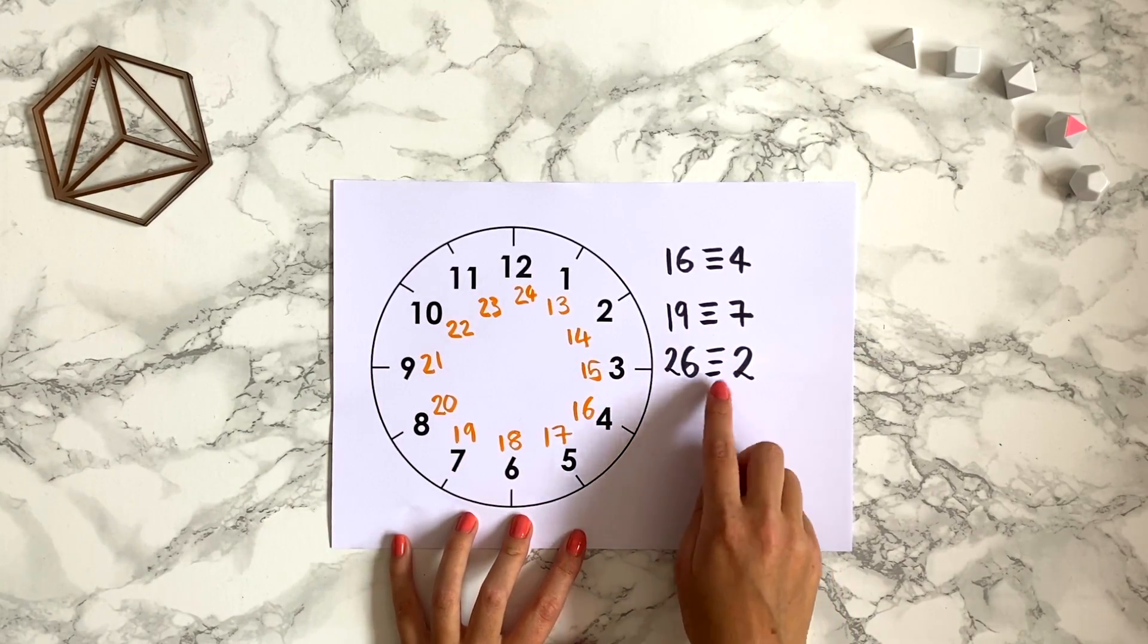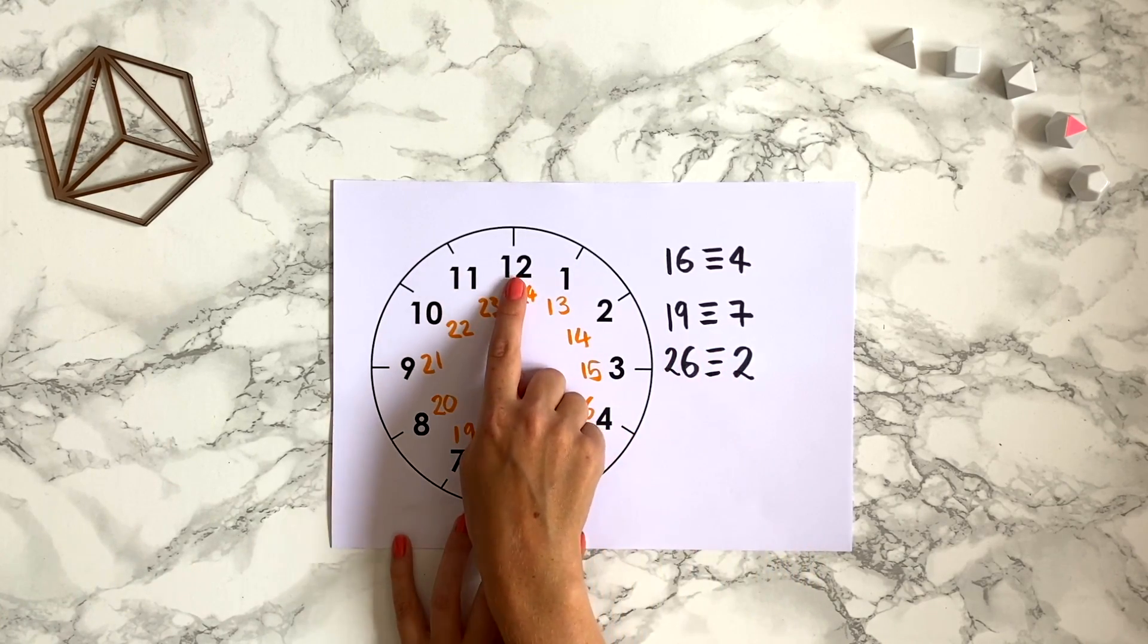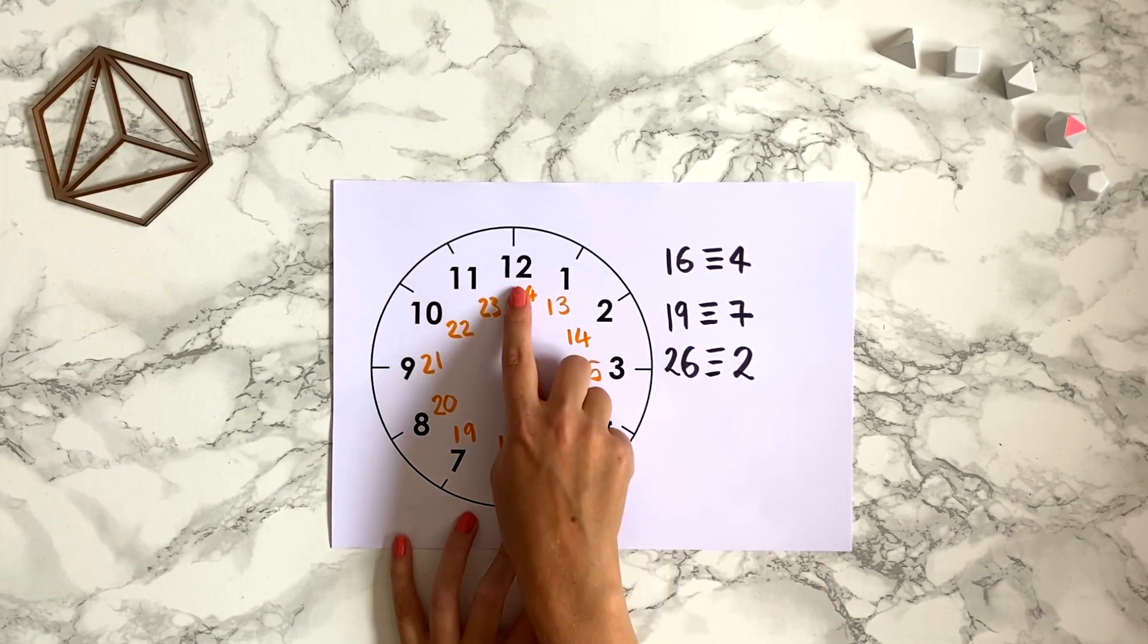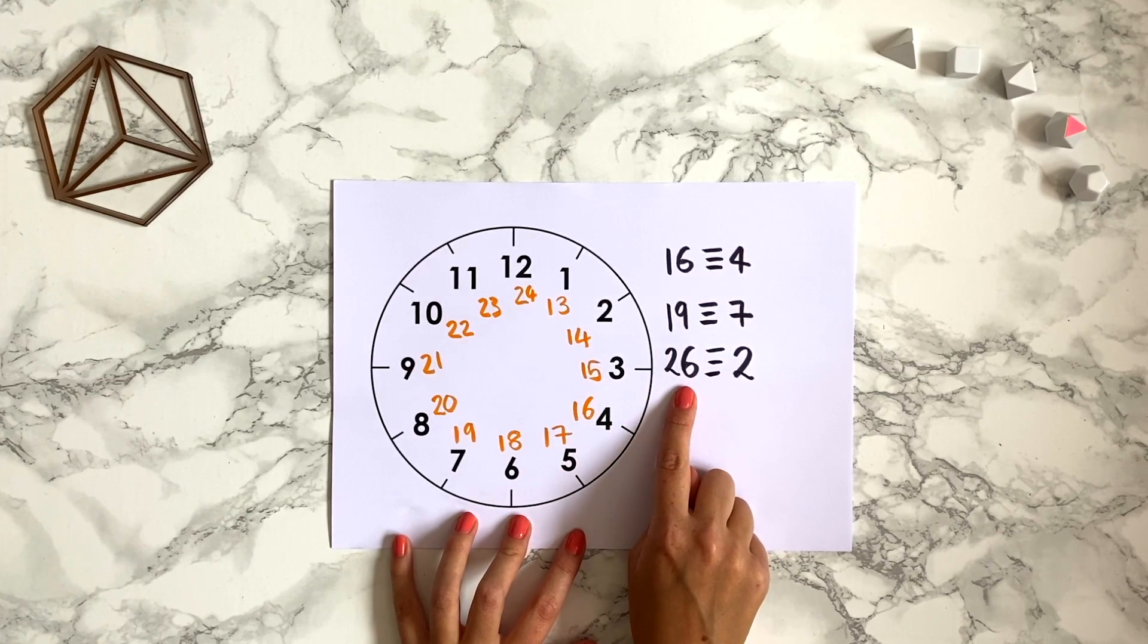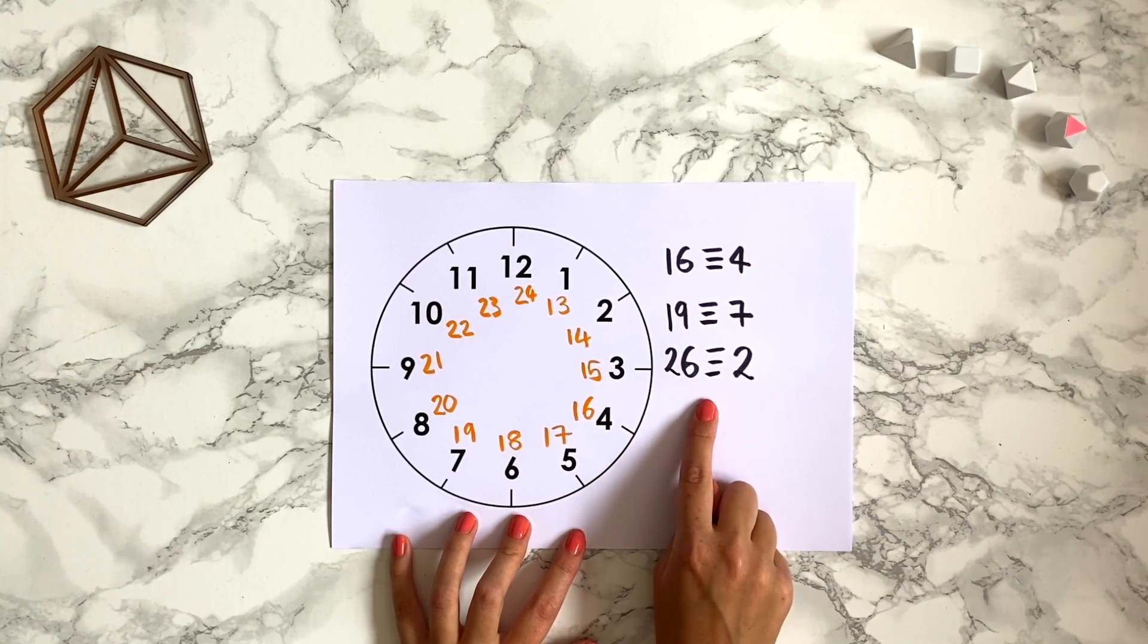Alternatively, the remainder when we divide 26 by 12 is 2 because 2 times 12 is 24 and then you add 2 to get to 26. So 26 is congruent to 2.